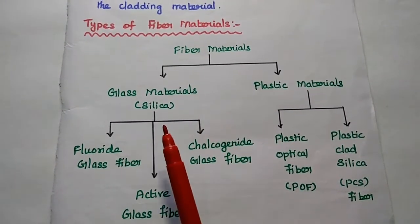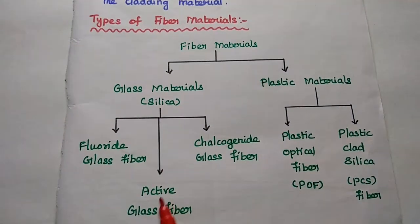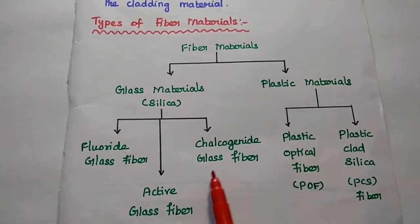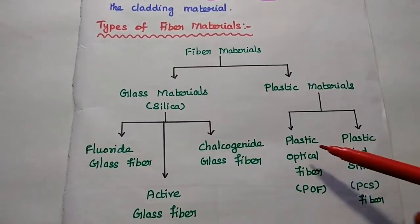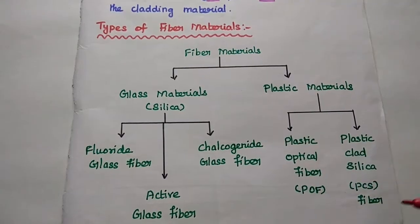So here the glass material is further classified into fluoride glass material and active glass fiber and chalcogenide glass fiber. Plastic material is further classified into two types: plastic optical fiber, plastic clad silica material.